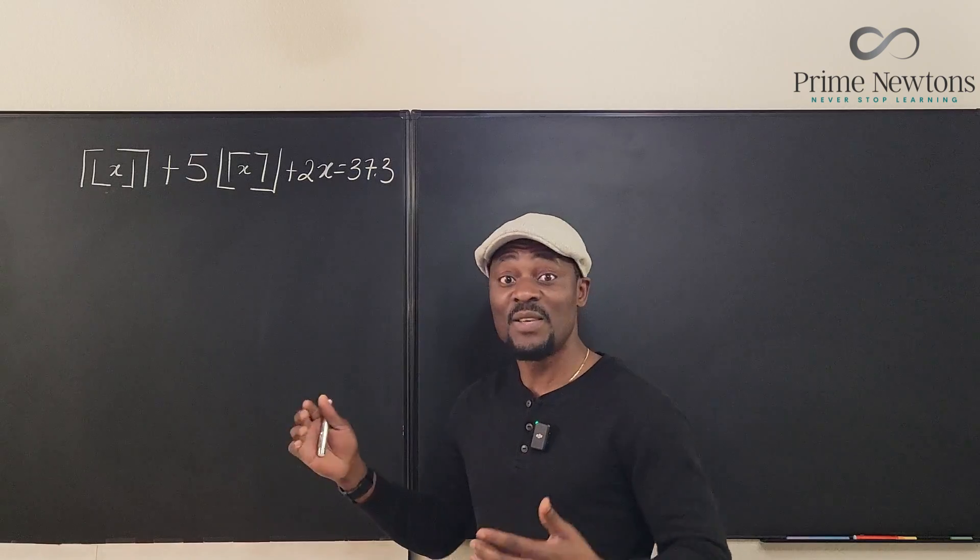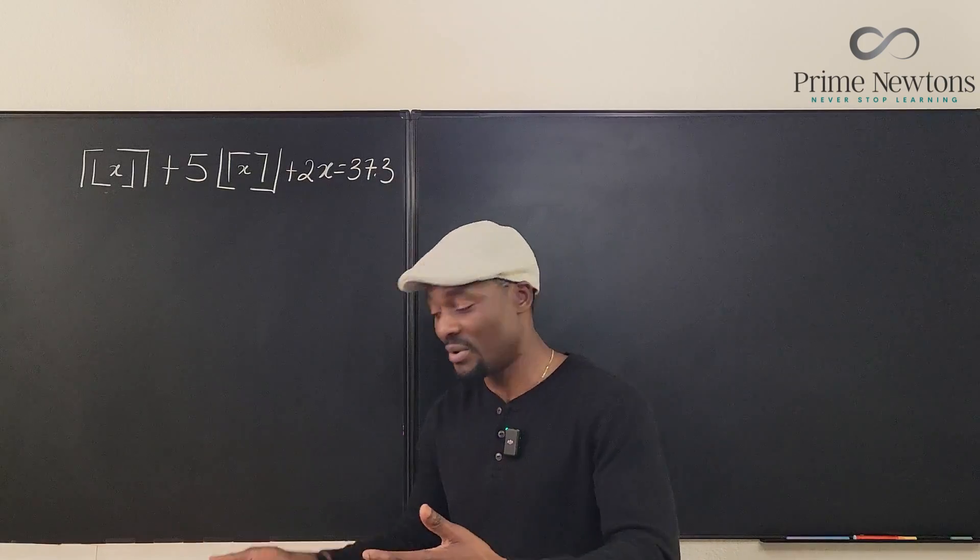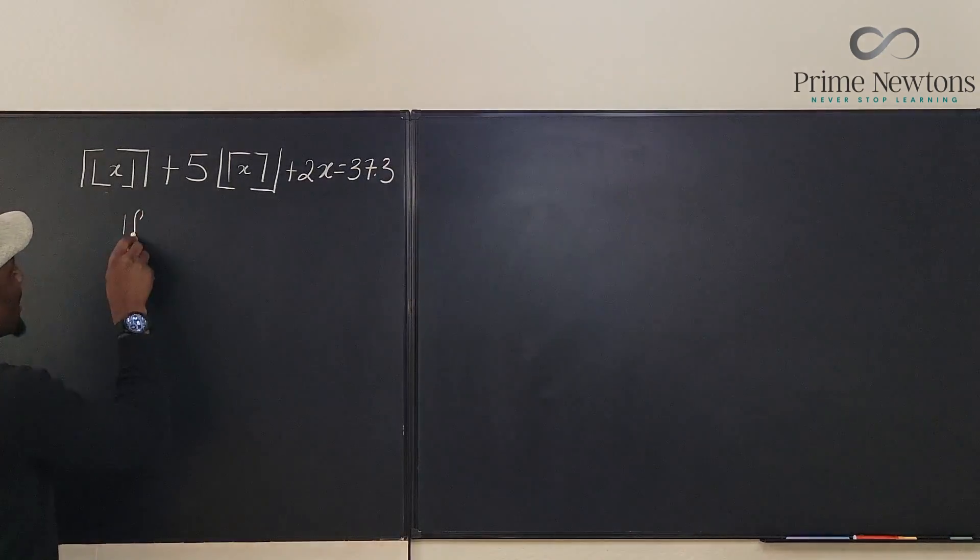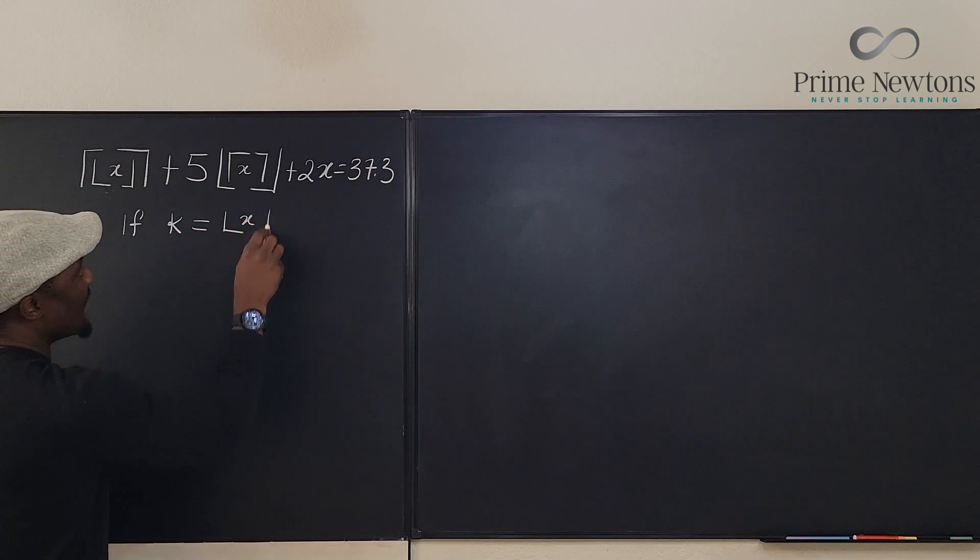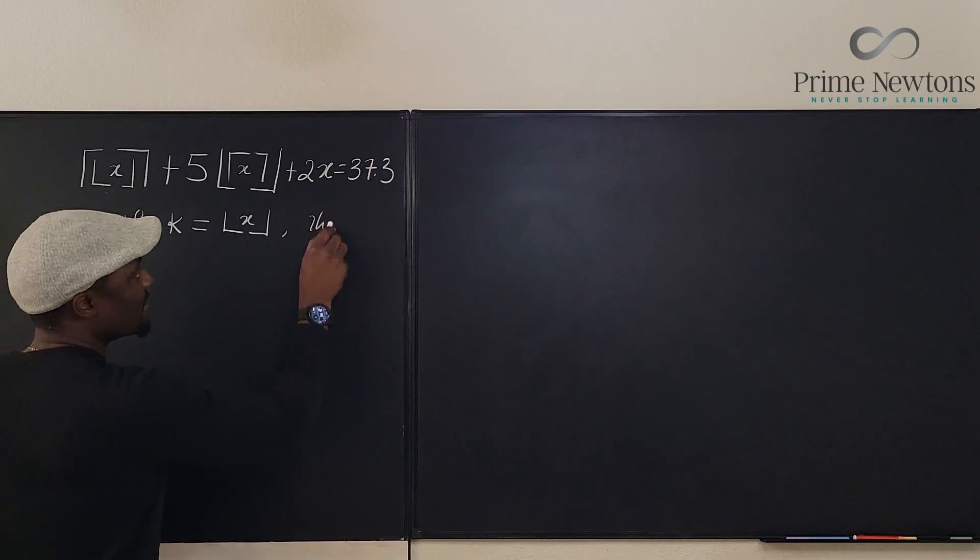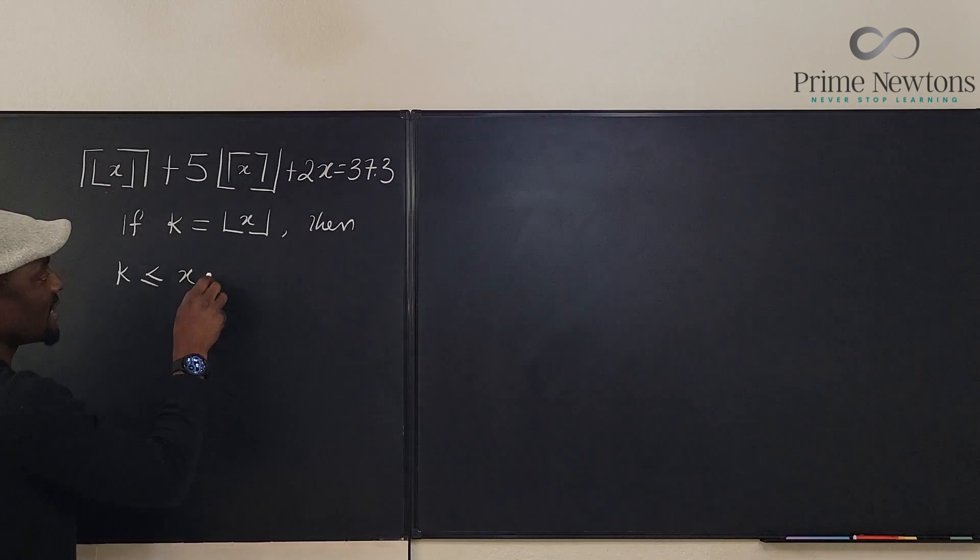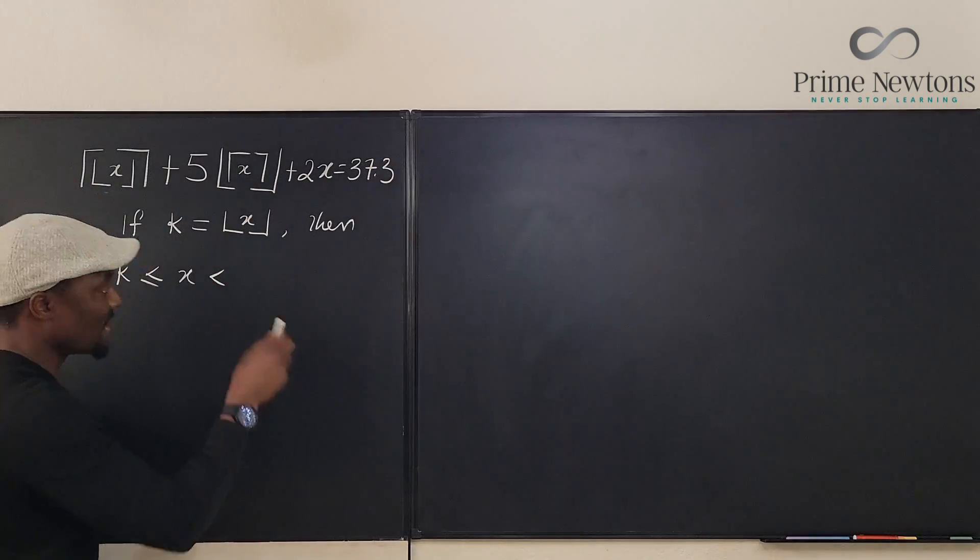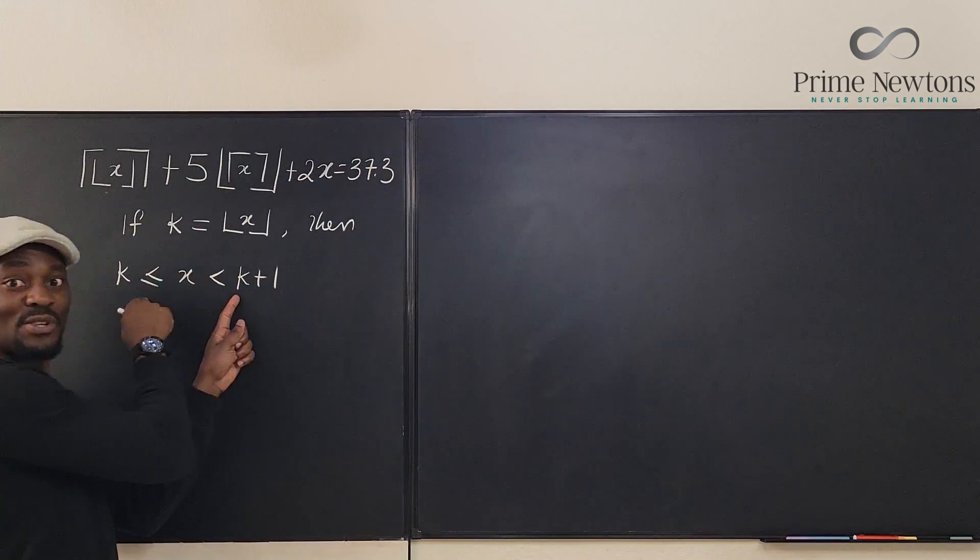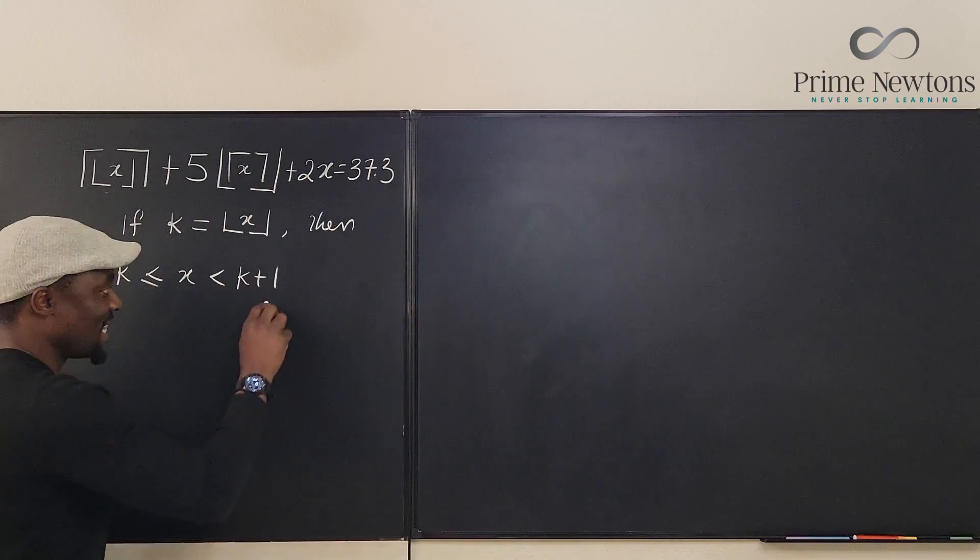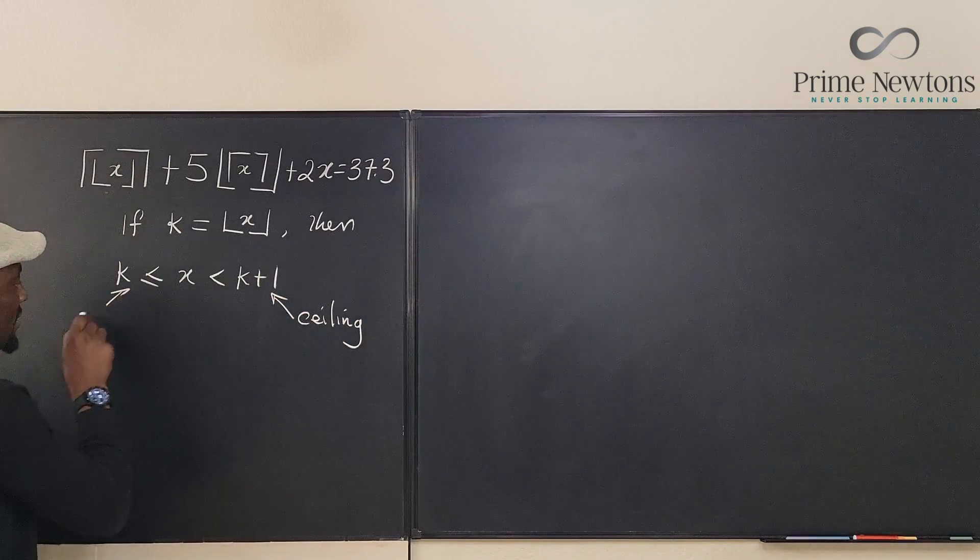Let's start by writing the original relationship between the floor and the ceiling and the number. We always know that if k is the floor of x, then k is less than or equal to x, and x is less than the integer after k, which is k plus 1. And just so you know, the integer after the floor is the ceiling.